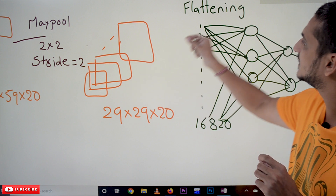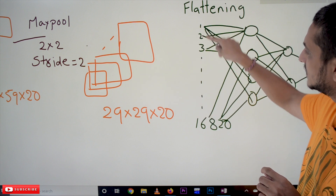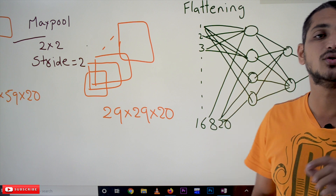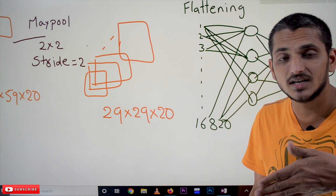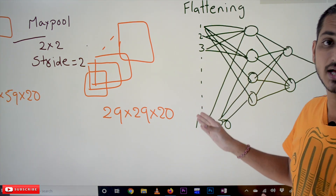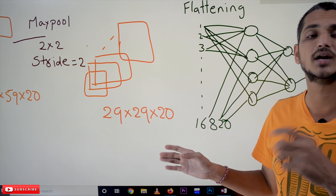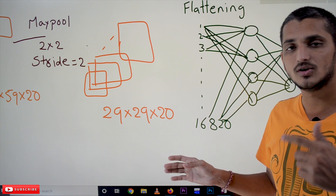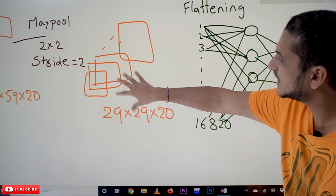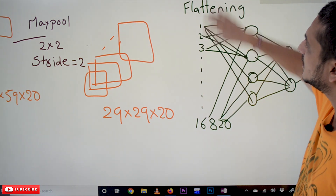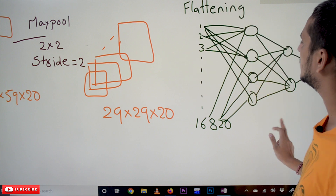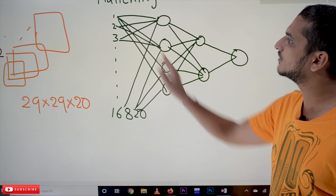Each pixel is taken as an input to the next layer — first pixel, second pixel, third pixel, and so on, all 16,820 pixels. This is what flattening means. From here we apply our standard artificial neural network, which we discussed previously in our first session. The flattening layer takes each pixel as input to the next layer, connecting into the standard neural network.